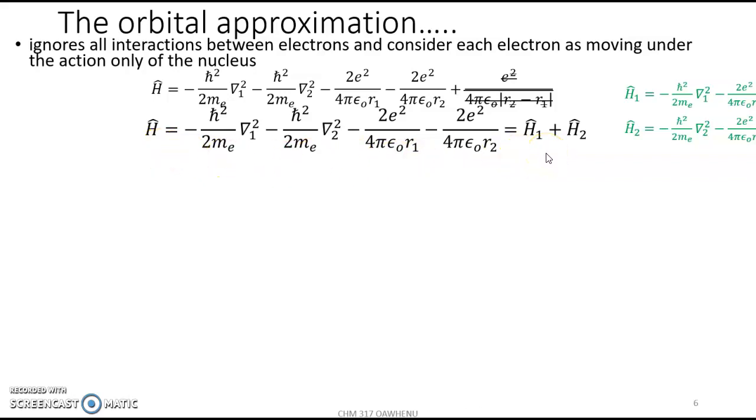If we recall the Hamiltonian for hydrogen, it's simply the addition of Hamiltonian one and Hamiltonian two, which bear resemblance to that of the hydrogen atom. And solving this makes it easier, as we can separate variables r1 and r2. And then we have that this wave function can be expressed as a product of wave function for electron one and wave function of electron two.